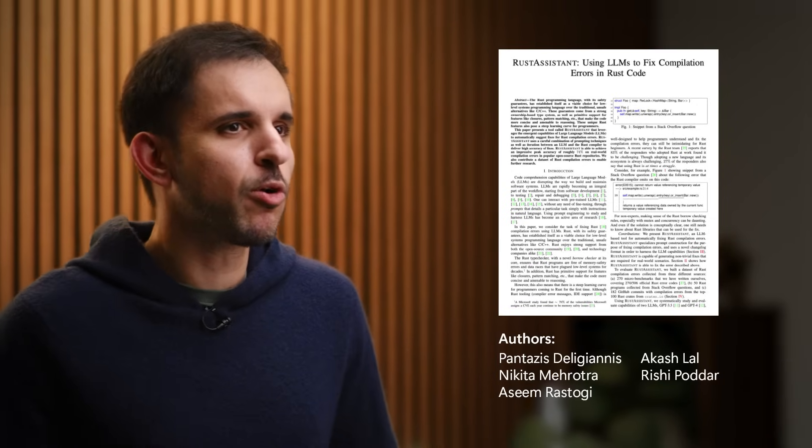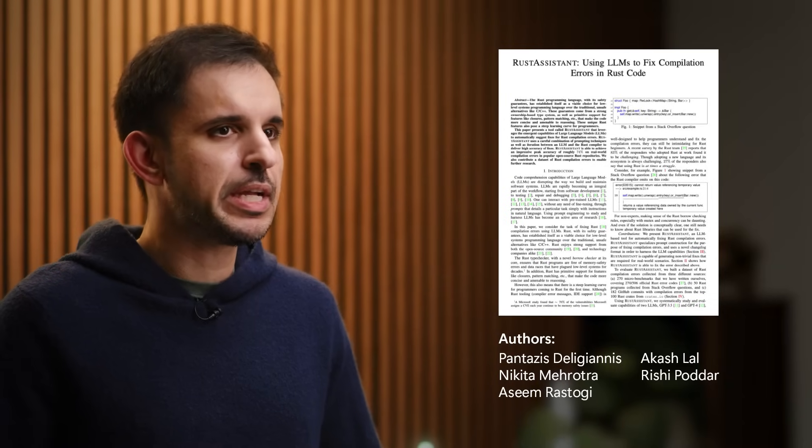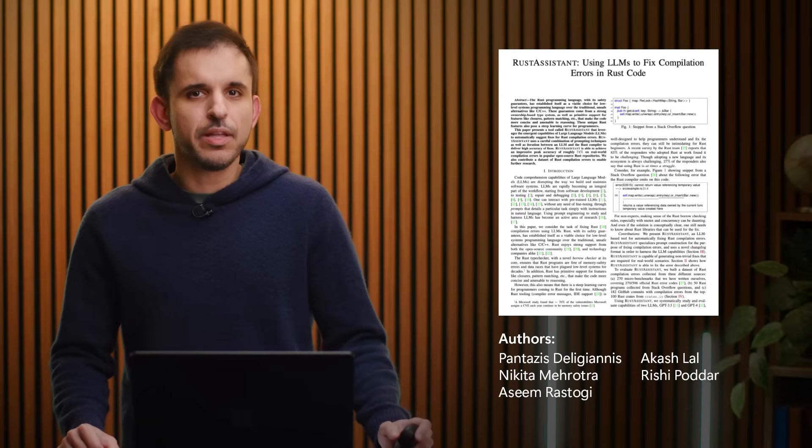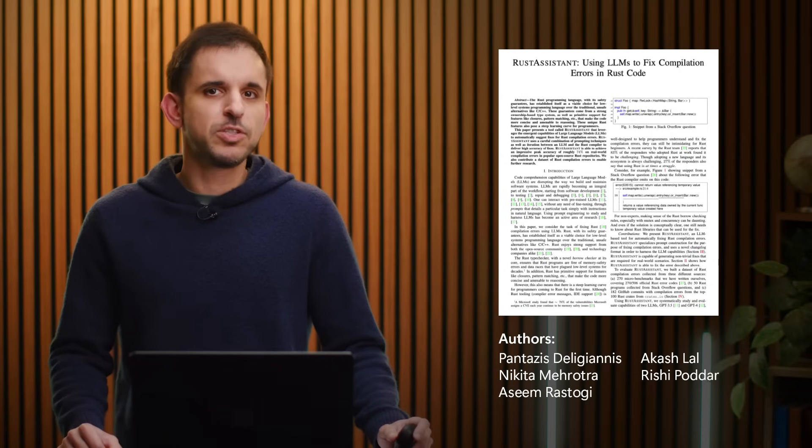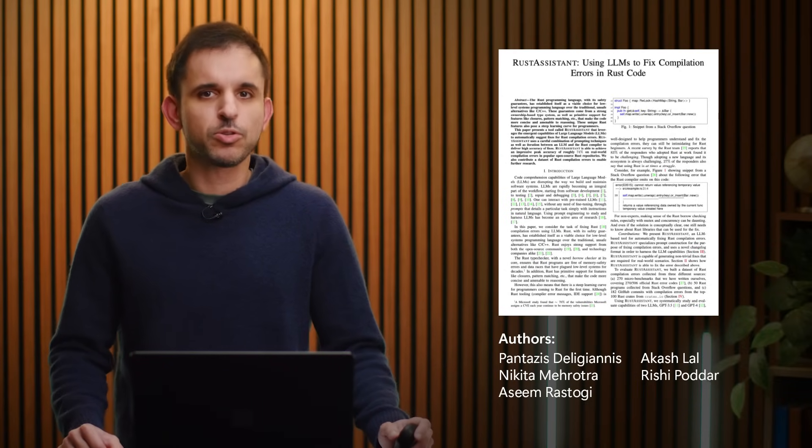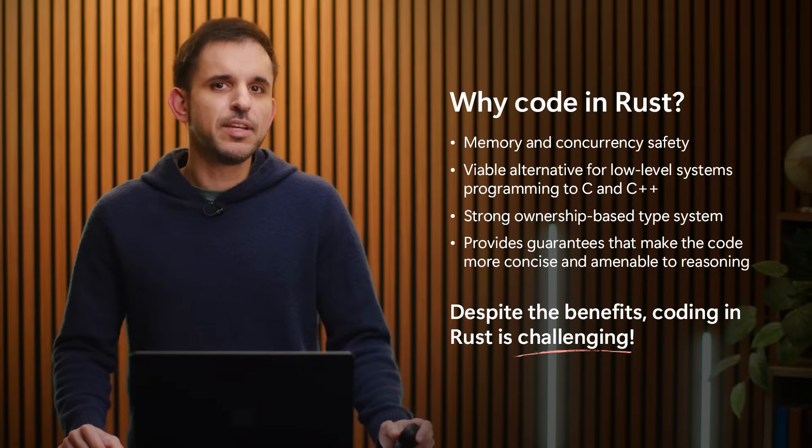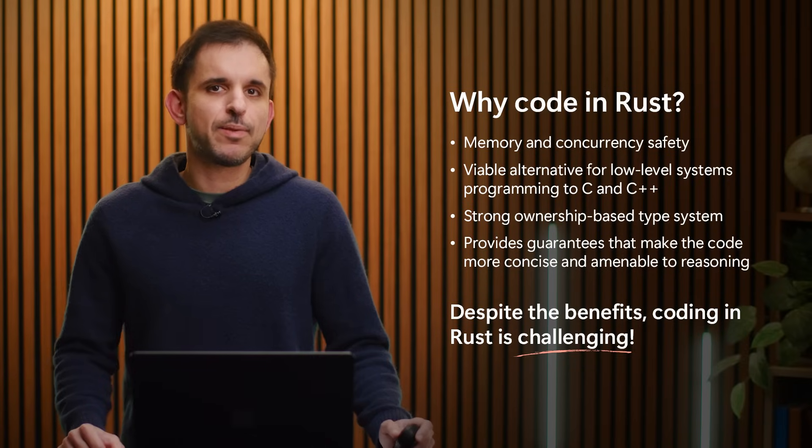Hello everyone, I'm Pantaziz and today I will be presenting our work on leveraging the power of large language models for safe low-level programming. Specifically, I will focus on our recent paper about Rust Assistant, which is a tool that uses LLMs to automatically fix compilation errors in code written in Rust. This work was done together with other individuals that are listed on the screen and will appear in the International Conference on Software Engineering later this spring. Okay, let's dive in. Why do we care about safe low-level programming with Rust?